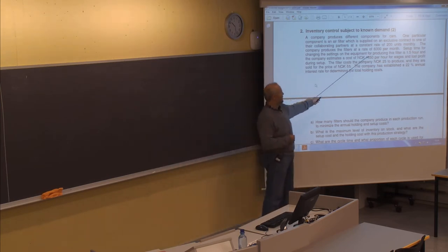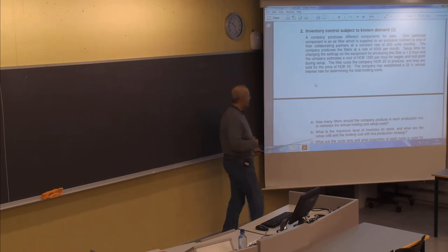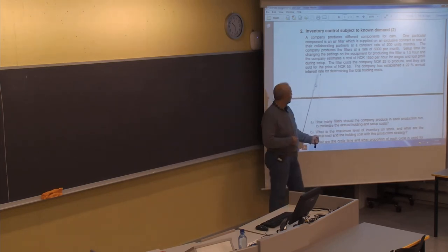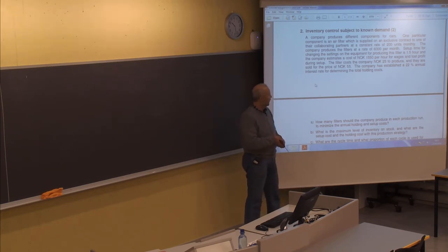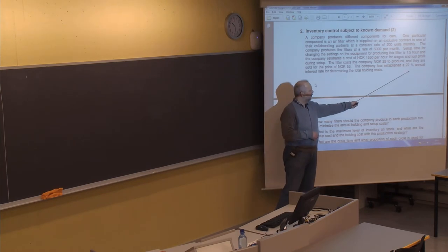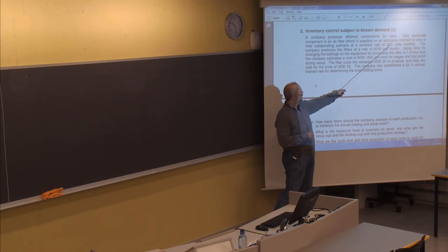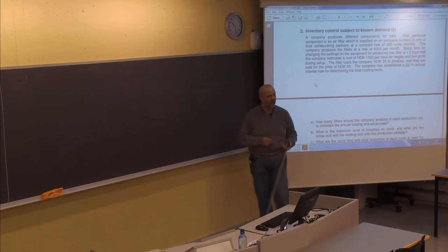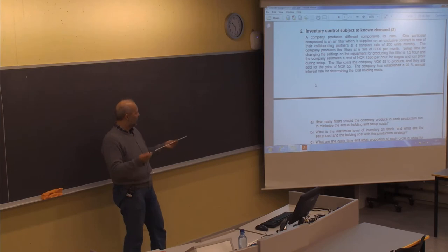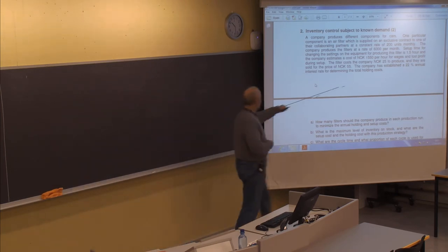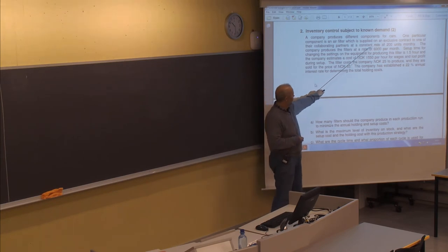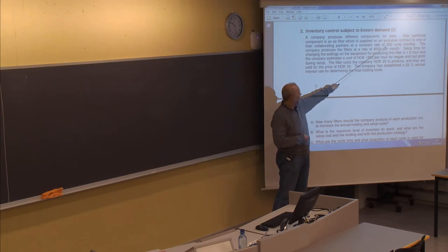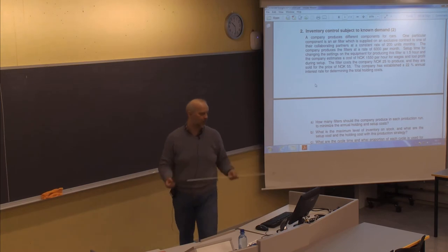Calculate the value of the setup cost. The cost to produce is 25, and they are sold for a price of 55. The annual total interest rate is 22% for determining the total holding cost. You need to pay attention to the time unit for the different parameters: the 22% is annual, but demand and production rates are given per month. Either convert to monthly interest rate, or convert demand and production rates to annual. Make sure you use the same time unit in the formulas, otherwise results will be totally wrong.